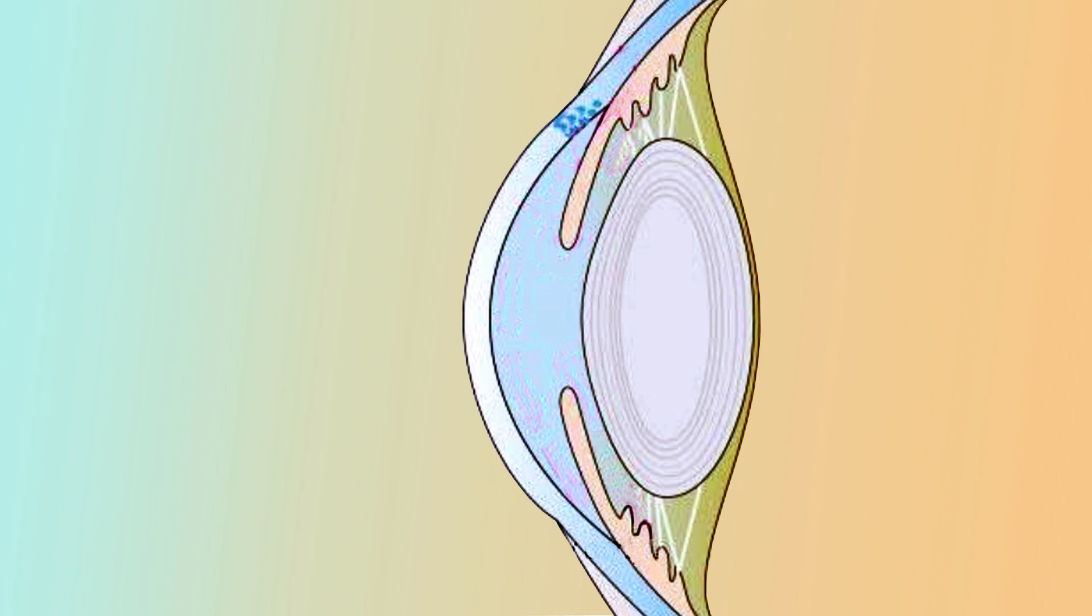Aqueous humor in the eye is secreted from the ciliary body into the posterior chamber. It reaches the anterior chamber via the pupil.